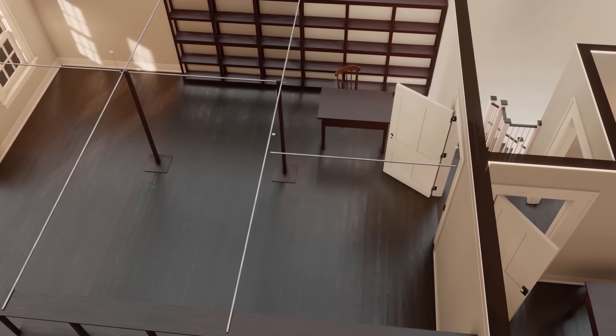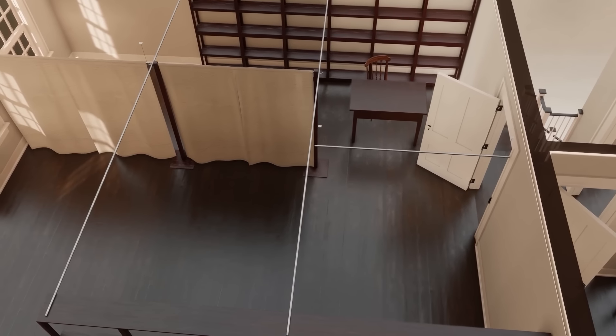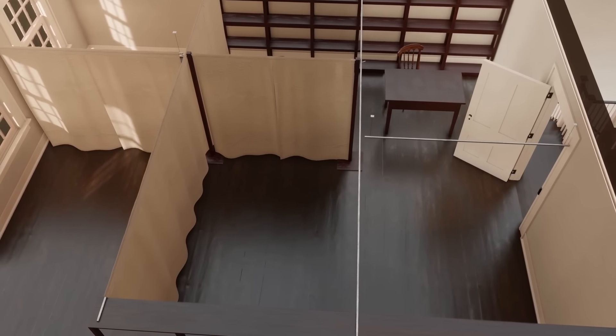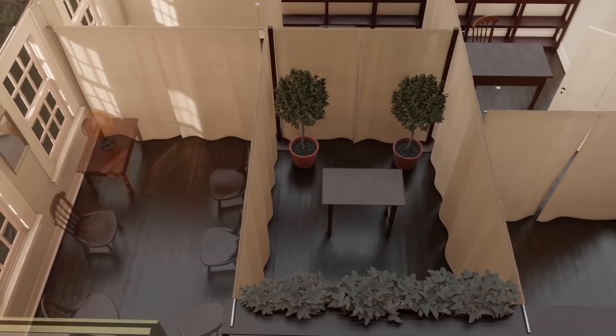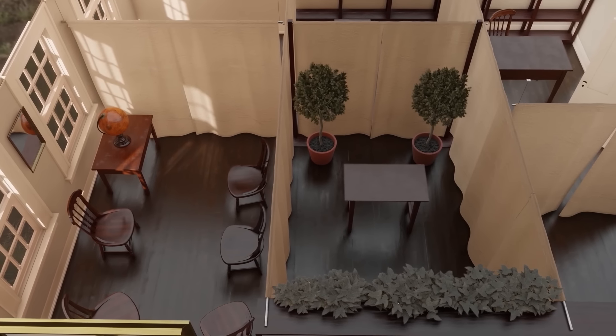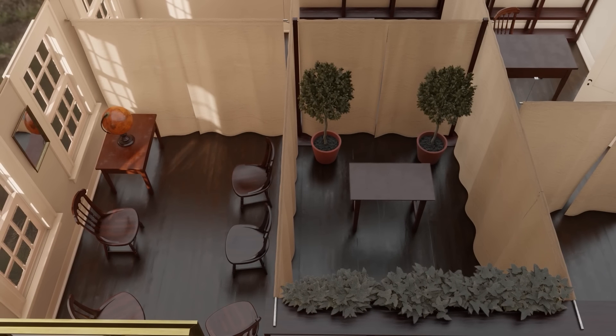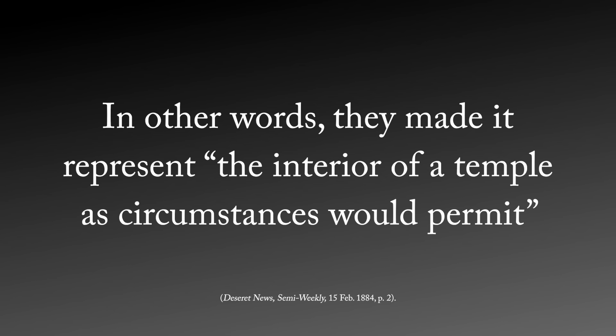They divided up the main room using rugs and canvases, and they even carried water — one member carried a bunch of water up and placed it in Joseph Smith's little office space. In other words, what they did to the Nauvoo red brick store was rearrange it, as much as circumstances would permit, to represent a temple interior — with Joseph Smith, in the words of Lucius Scoville, dictating everything.